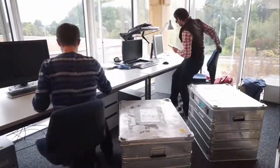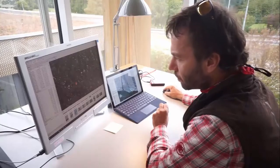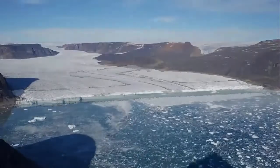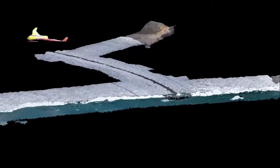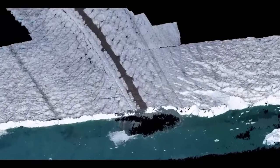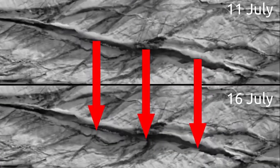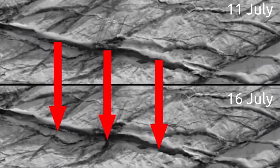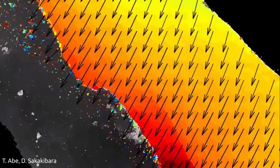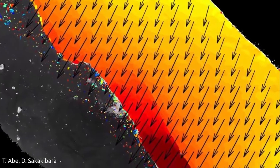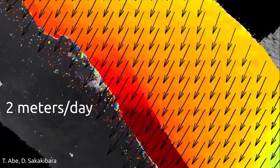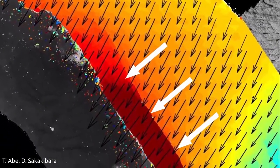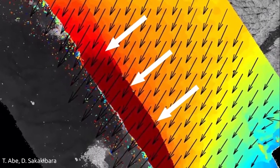Collecting data is one step, but analyzing the data is another. The pictures taken by the drone serve to map the glacier front with great accuracy. By tracking the displacement of crevices between two flights, the velocity of the glacier surface can be determined. Here, for instance, the ice moves up to two meters per day, and one can see that a one kilometer long iceberg is about to detach.